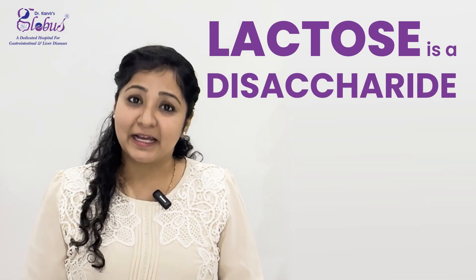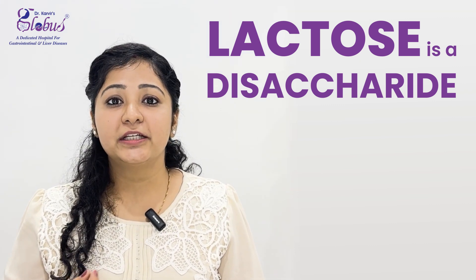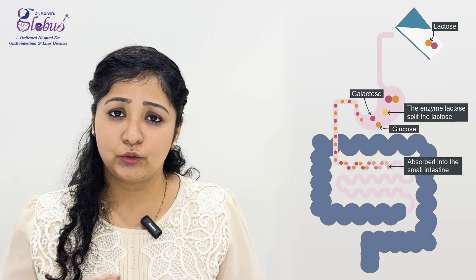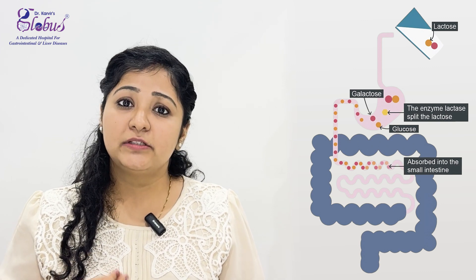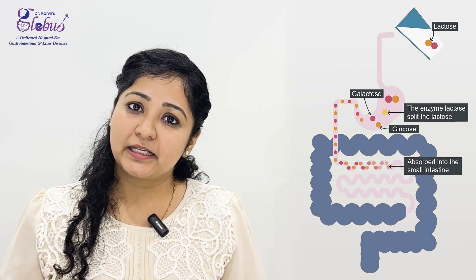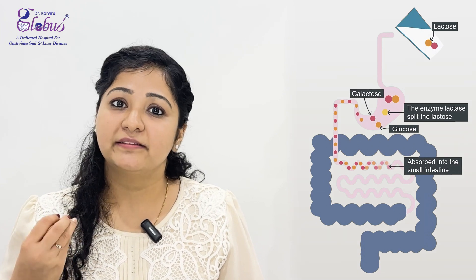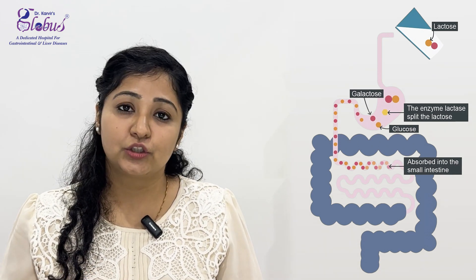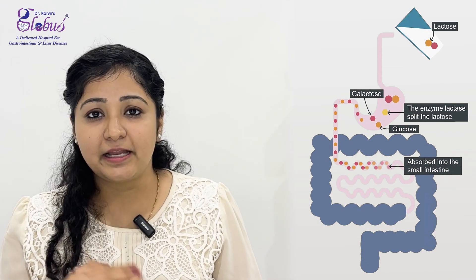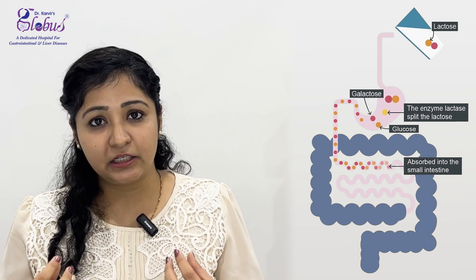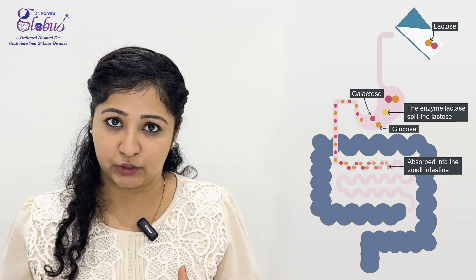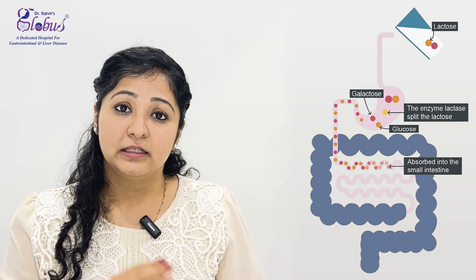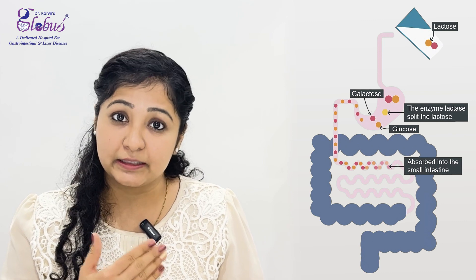Lactose is a disaccharide, which is made from glucose and galactose. When lactose comes through any food like milk into our small intestine, the cells called Enterocytes contain an enzyme called Lactase, which divides lactose into its monosaccharides — that is glucose and galactose. Since lactose is not absorbed directly in Enterocytes, the division through Lactase is important.